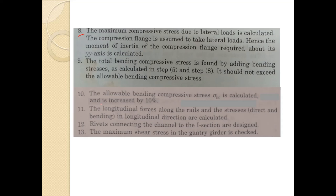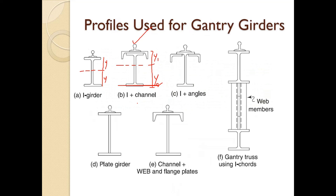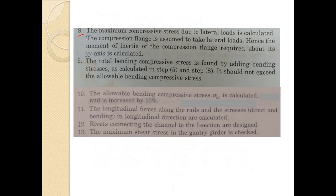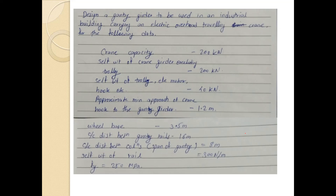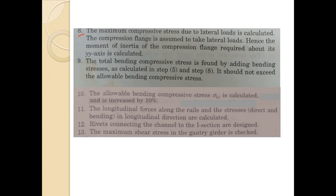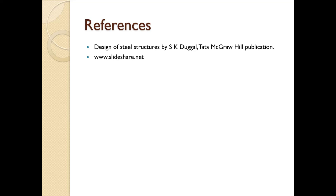Step 9 — The longitudinal forces along the rails and the stresses (direct and bending) in the longitudinal direction are calculated. The connections using rivets to connect the channel to the I-section are designed. Finally, the maximum shear stress in the gantry girder is checked. In coming lectures we will solve problems on gantry girders. References for today's lecture: IS Steel Structures by S.K. Duggal and Slideshare.net. Thank you.